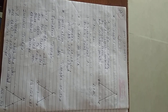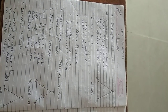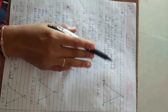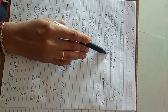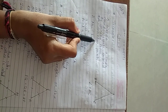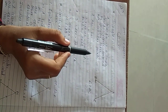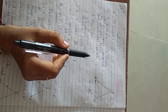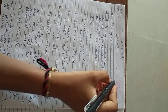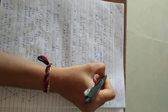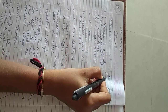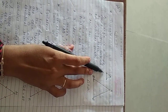Let's start chapter number 20. The topic is triangle. A triangle is a simple closed figure formed by joining three non-collinear points. Non-collinear points means if three points are not lying on the same line, then they are called non-collinear points. Here three non-collinear points are like this, and if we join these three points, then we get a triangle.